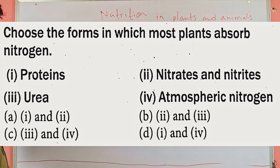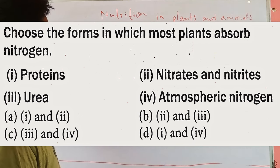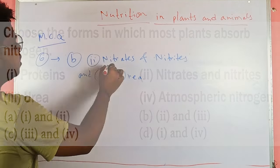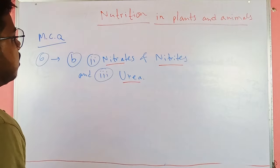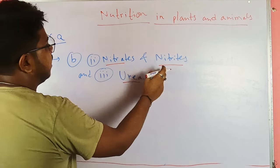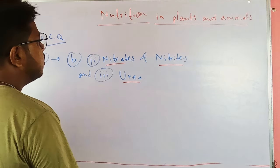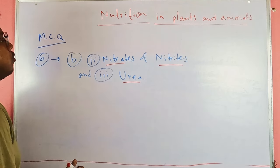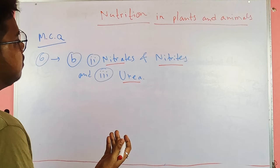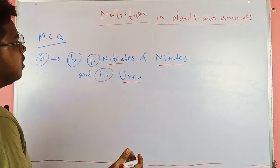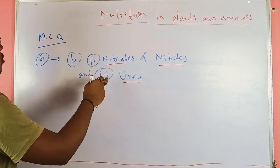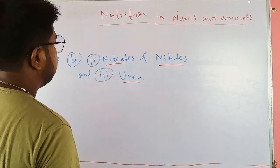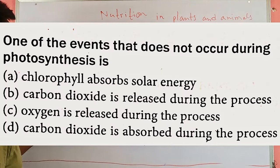The next question asks the form in which most plants absorb nitrogen from the outer environment. The correct answer is option B: nitrates, nitrites, and urea. Plants convert atmospheric nitrogen into nitrates and nitrites, then urea, and assimilate the nitrogen within their cells to make DNA backbones and perform other essential functions.